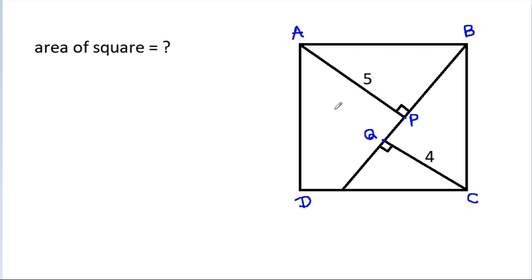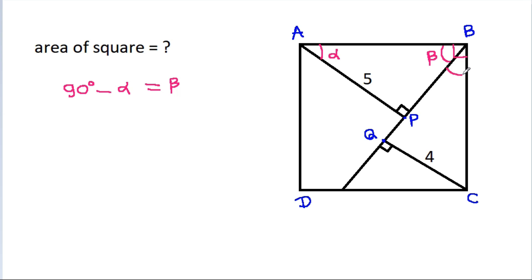So, ABCD is a square. That means this angle will be 90 degrees. And suppose this angle is alpha, then this angle is 90 degrees. So this angle will be 90 minus alpha — suppose beta. And again this angle will be 90 minus beta, that will be alpha. And this angle is 90 degrees, so this angle will be 90 minus alpha, that will be beta.